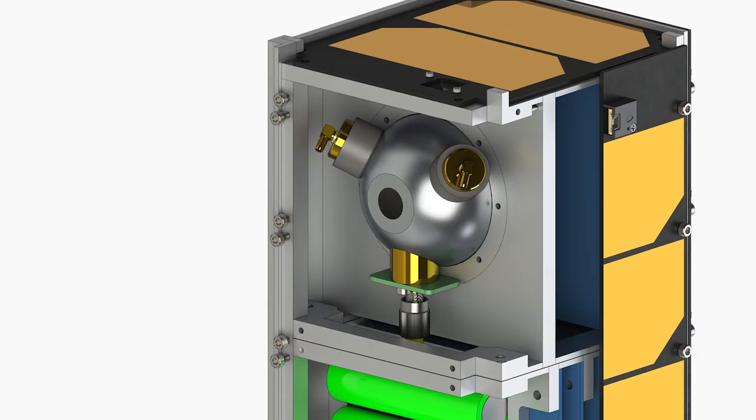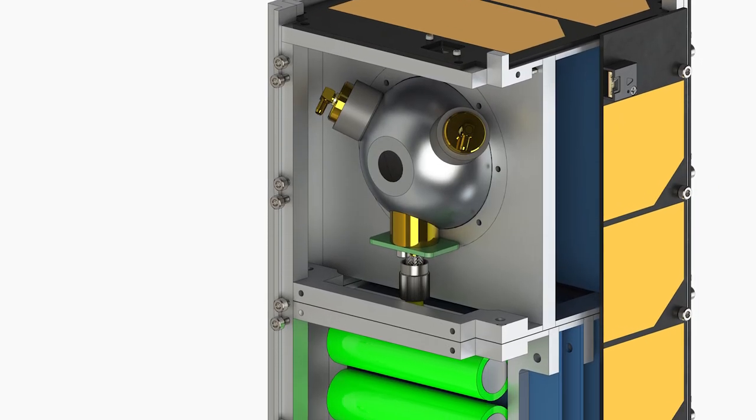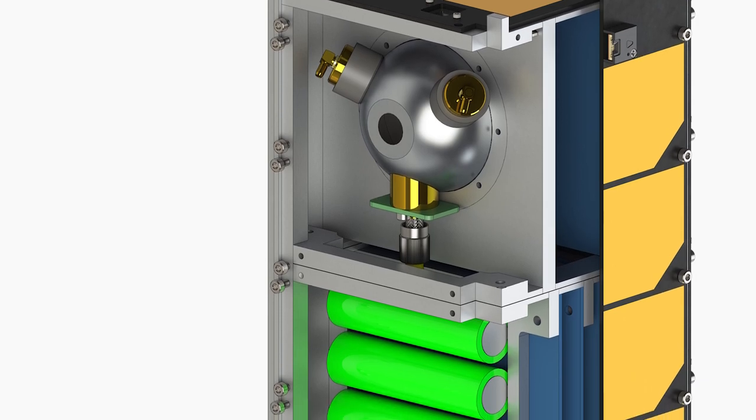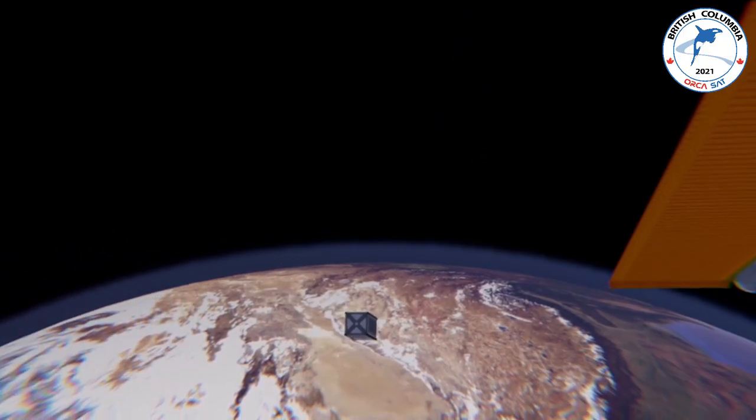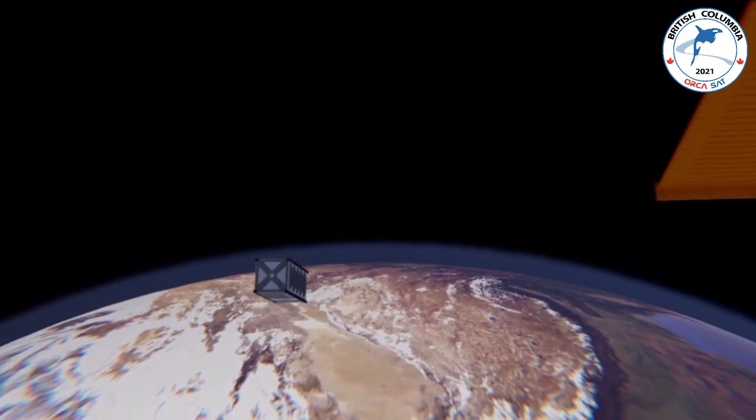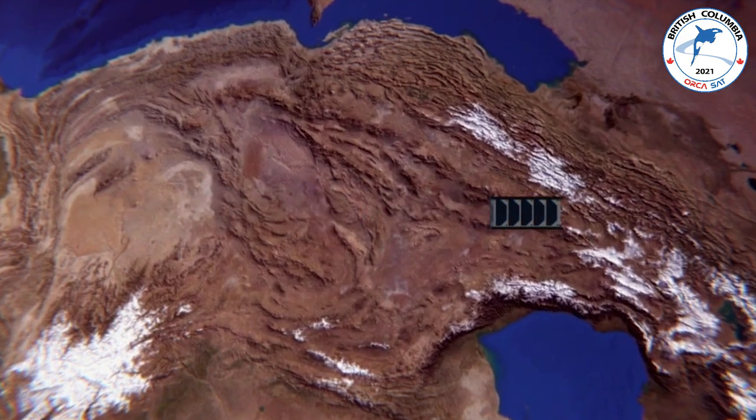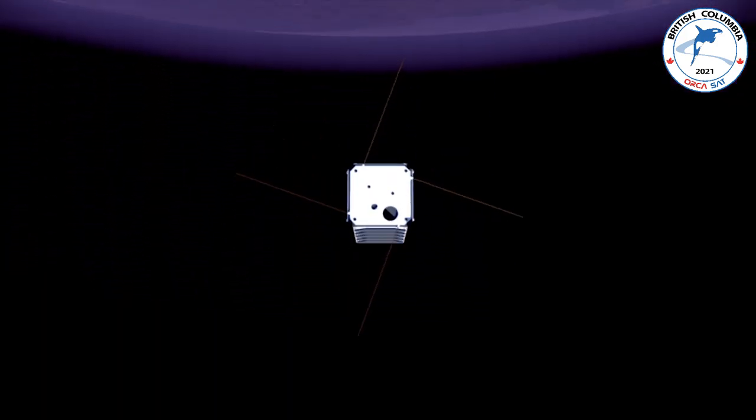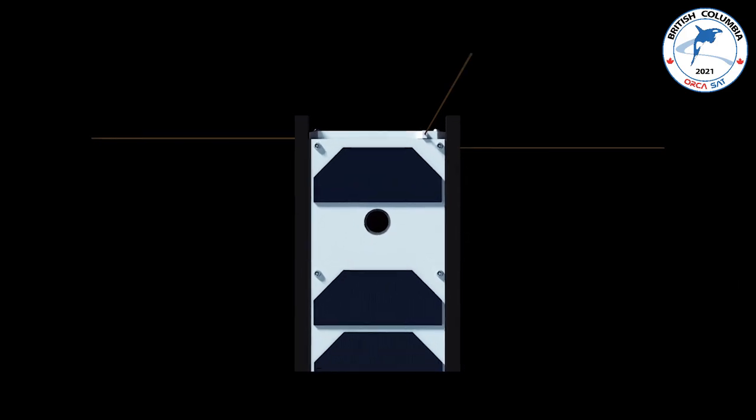Using an artificial star, ORCASAT will calibrate ground-based observatories from low-Earth orbit. After being deployed from the International Space Station, ORCASAT will enter an orbit of roughly 400 kilometers. Once over an area of interest, ORCASAT will activate its artificial star and take a reading on board of how much light is actually being emitted.